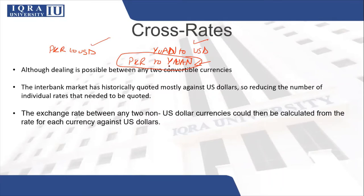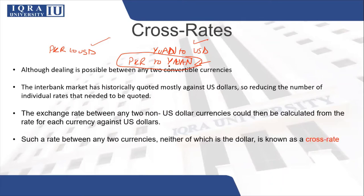The exchange rate between any two non-US dollar currencies can be calculated from the rate for each currency against the US dollar. Such a rate between any two currencies, neither of which is the dollar, is known as a cross rate. Basically, a cross rate is any rate that can be calculated with the help of two other rates.